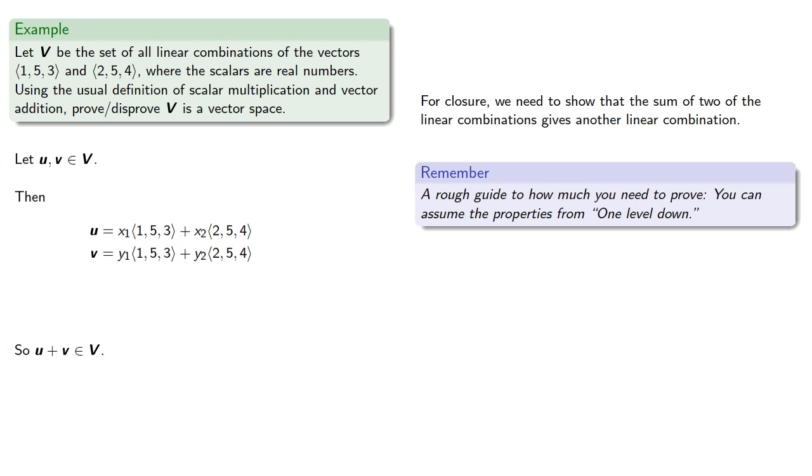So here's the important distinction. The left-hand side is where we want to be proving things—we want to prove that u + v is in capital V. The right-hand side is our one level down. Because it's one level down, everything we'd like to be able to do with standard vectors and standard scalar multiplication and standard vector addition, we can do without comment. This is a rough guideline, but it's a good guideline to start with.